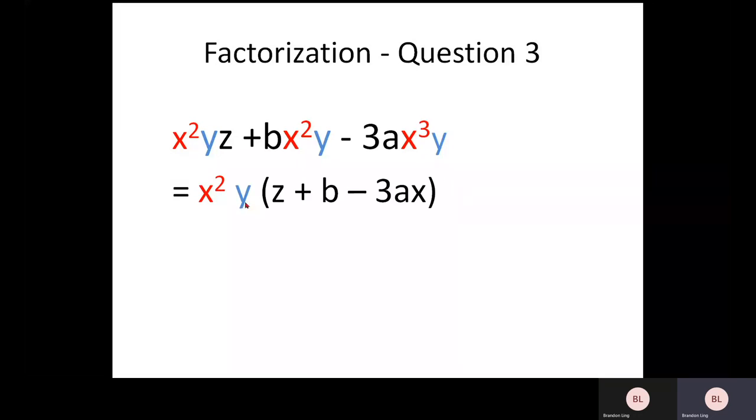So this X squared and Y out, what you need to do is you can just write the remaining terms inside, which is the Z plus B minus 3A. And in this case, because we have 3X here, when you pull out 2X, it becomes 1X inside. So you have Z plus B minus 3AX.